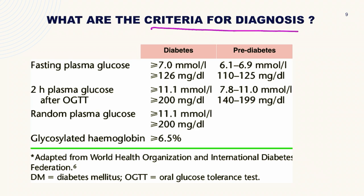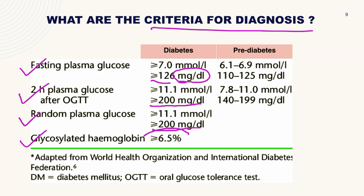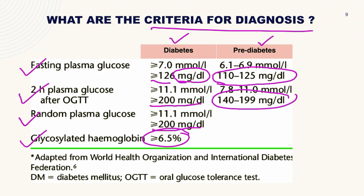The criteria for diagnosis of diabetes mellitus include fasting blood sugar, 2-hour plasma glucose after OGTT, random blood sugar, and glycosylated hemoglobin. Fasting blood sugar ≥126 mg/dL, postprandial or 2-hour plasma glucose after OGTT ≥200 mg/dL, random blood sugar ≥200 mg/dL, or HbA1c ≥6.5% diagnoses diabetes. For pre-diabetes or impaired glucose tolerance, fasting blood sugar is 110–125 mg/dL and postprandial is 140–199 mg/dL, based on IDF and WHO recommendations.